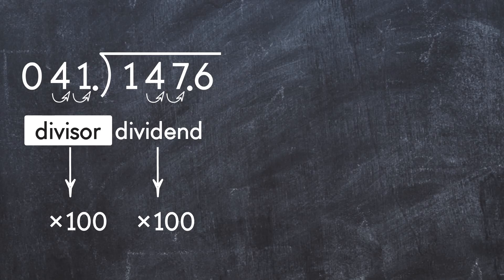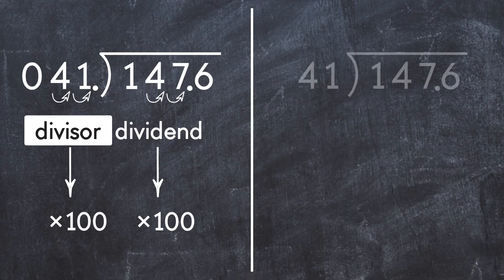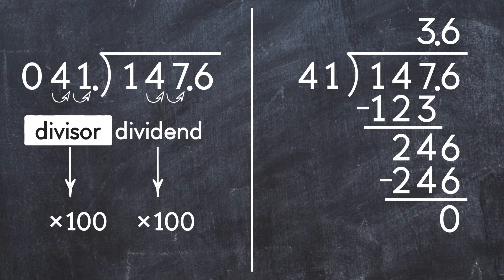We have 147.6 divided by 41. Solving by long division gives us 3.6. So 1.476 divided by 0.41 equals 3.6.